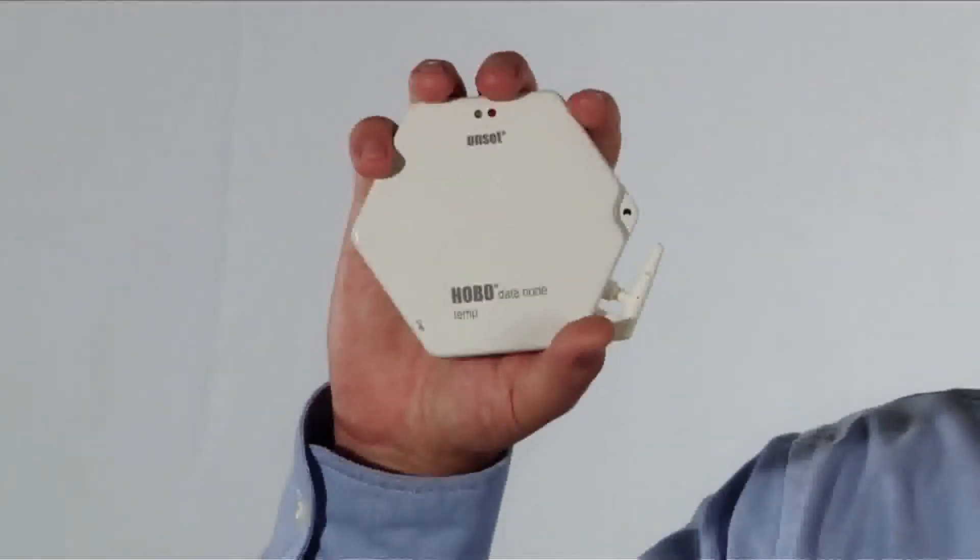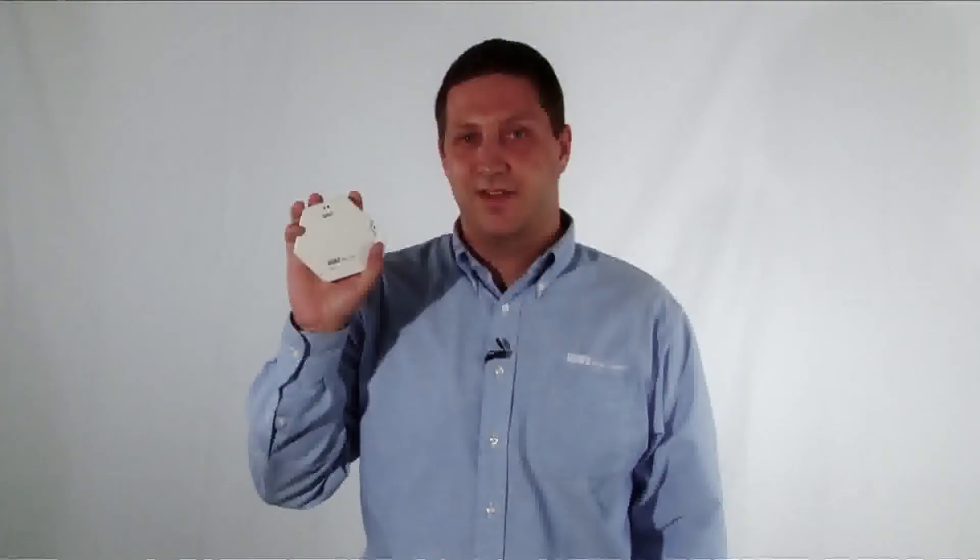Its compact size makes it easy for deployment wherever data is needed. It will notify you of alarm conditions via email or text message, has onboard buffer memory, and uses the powerful Hobo Pro software for organizing and viewing your data.